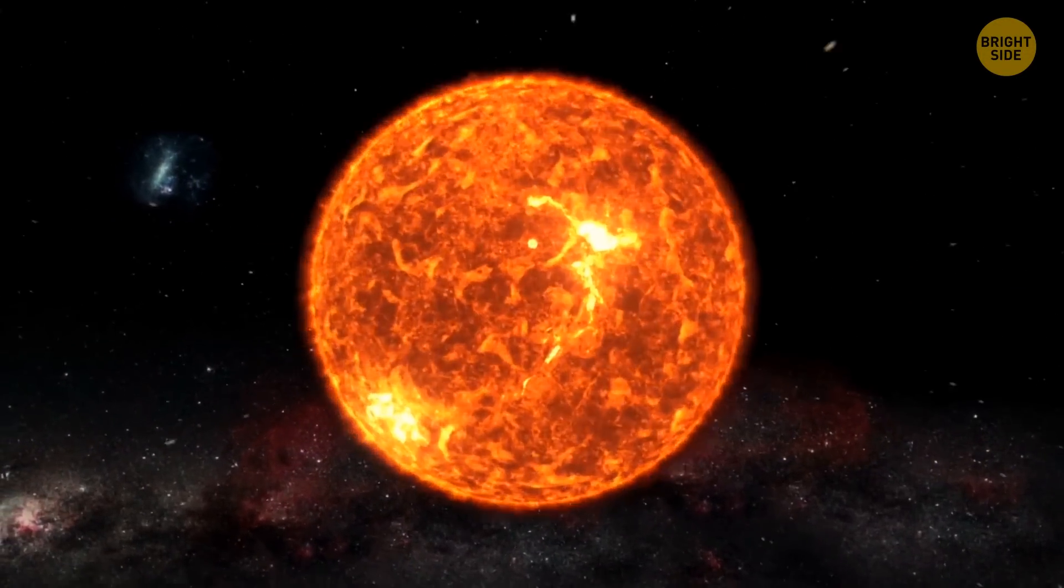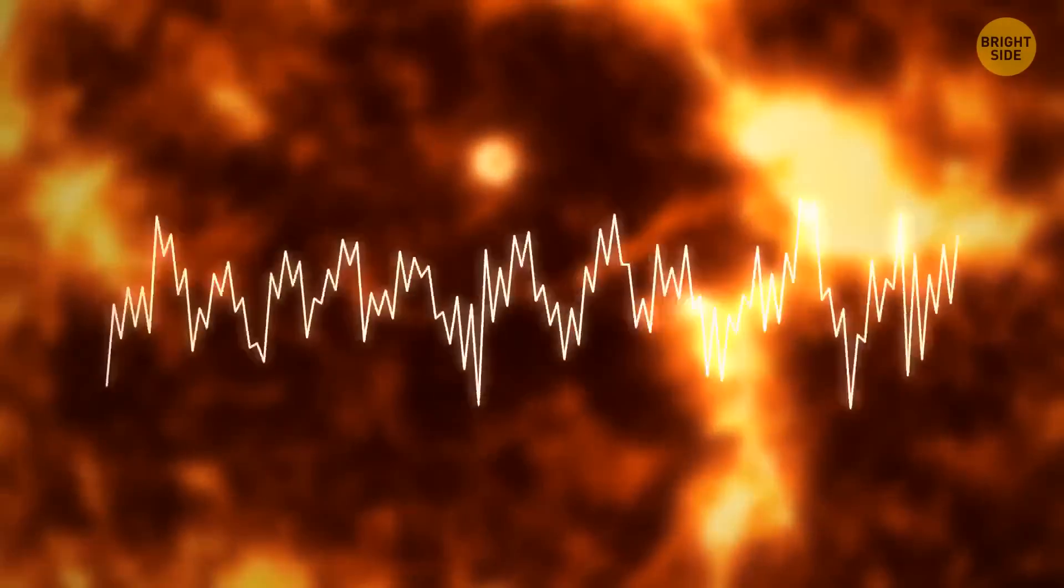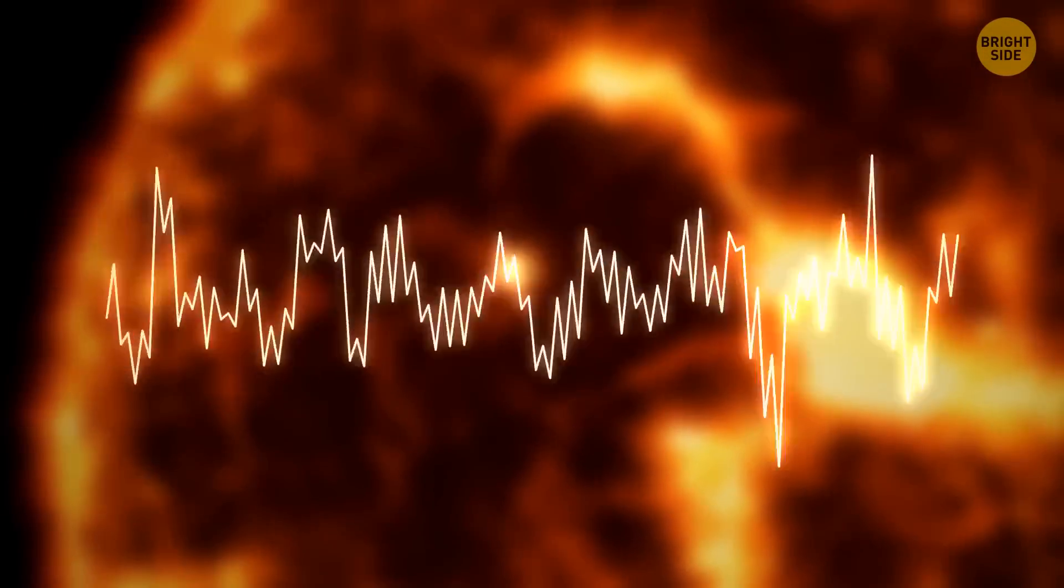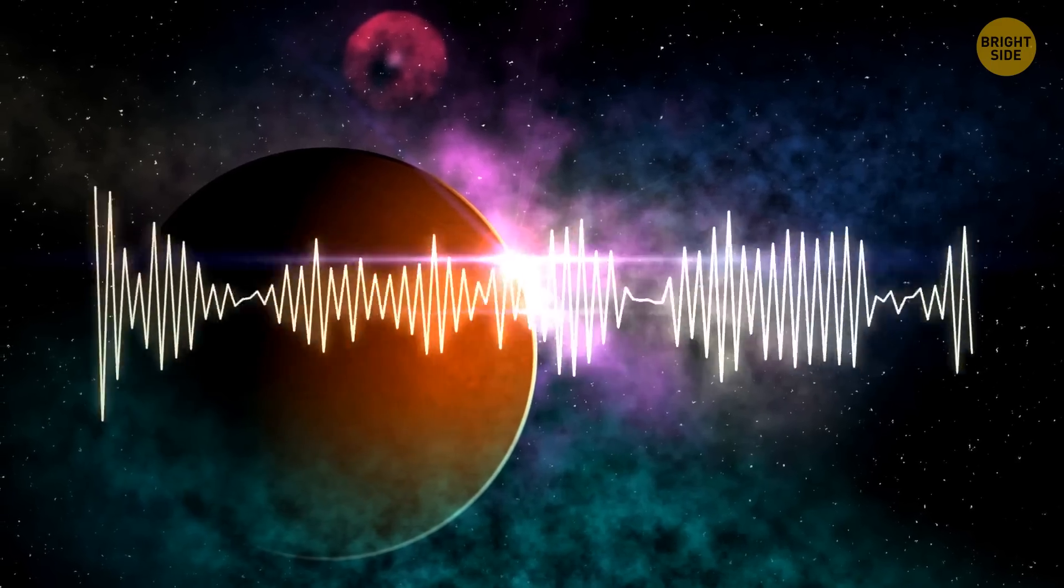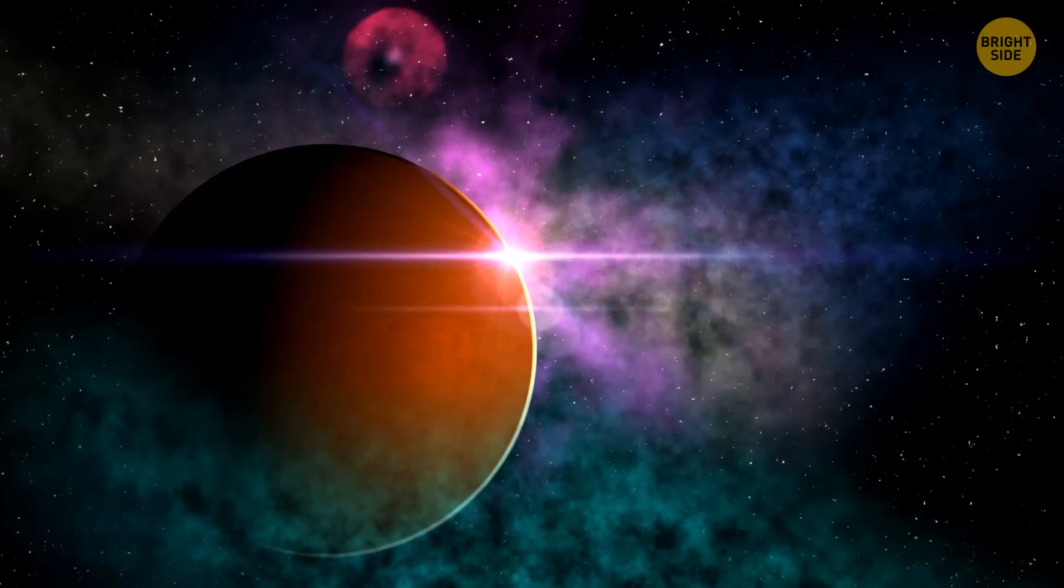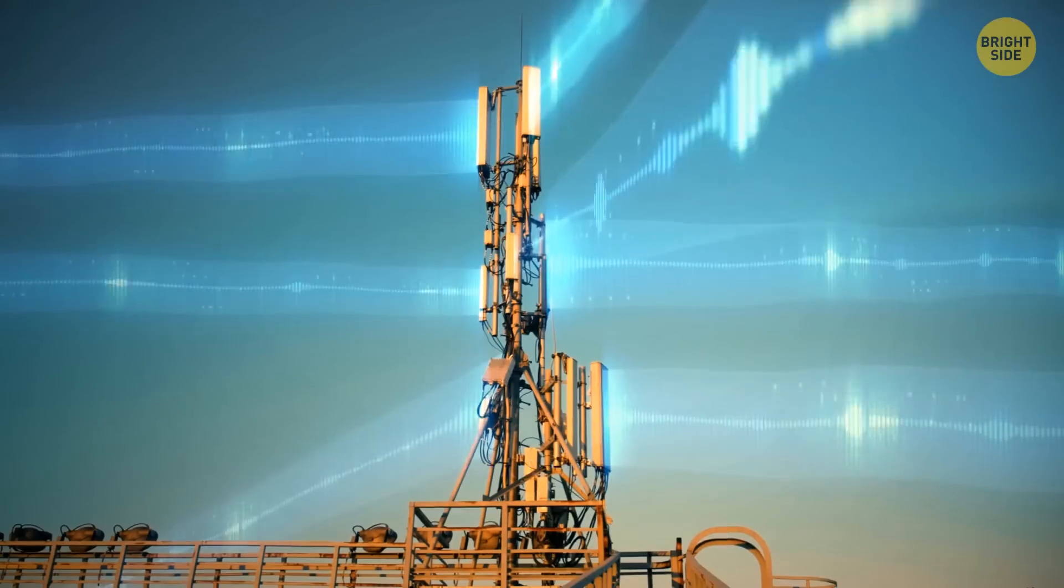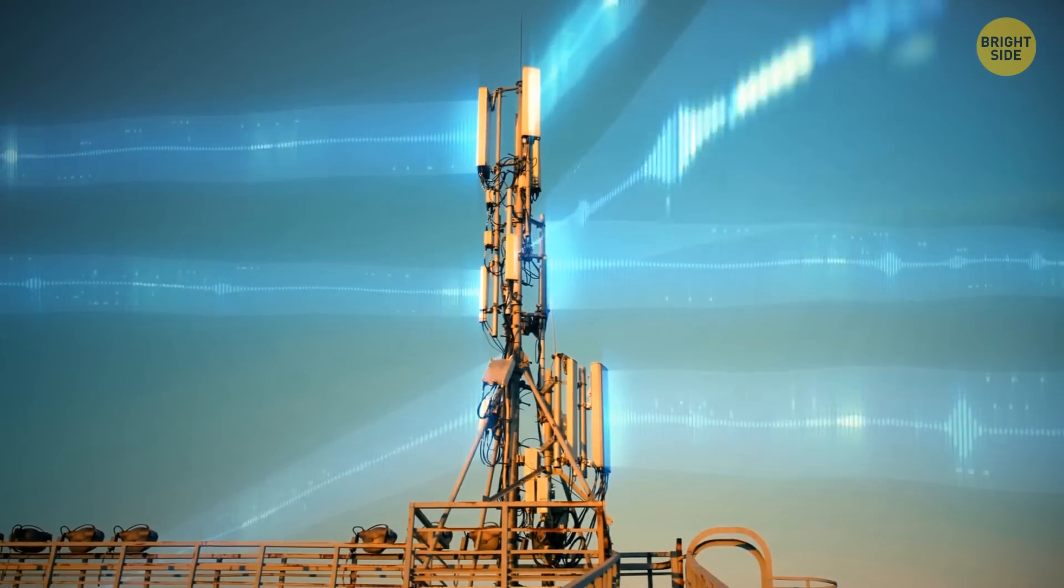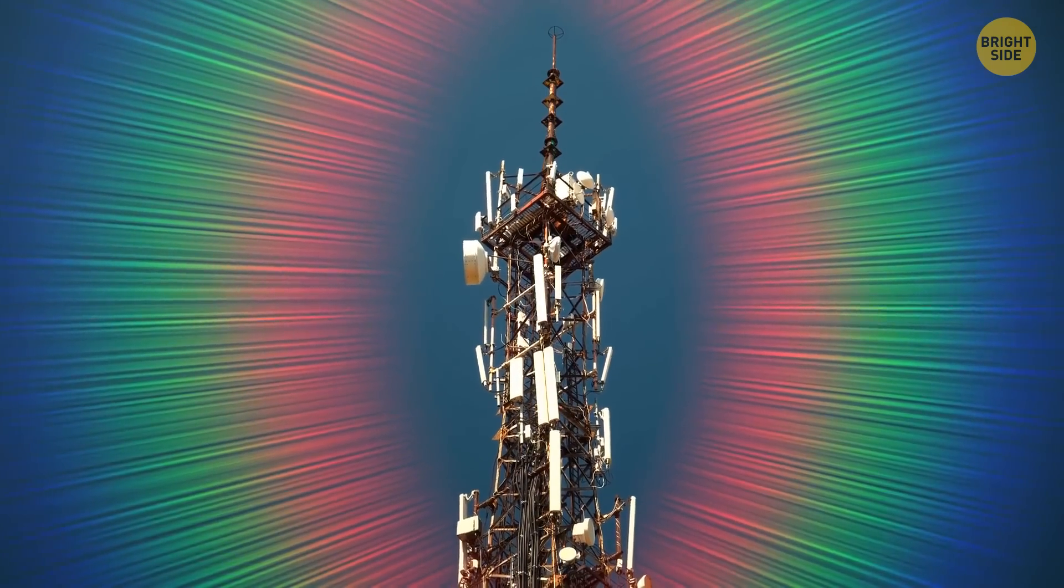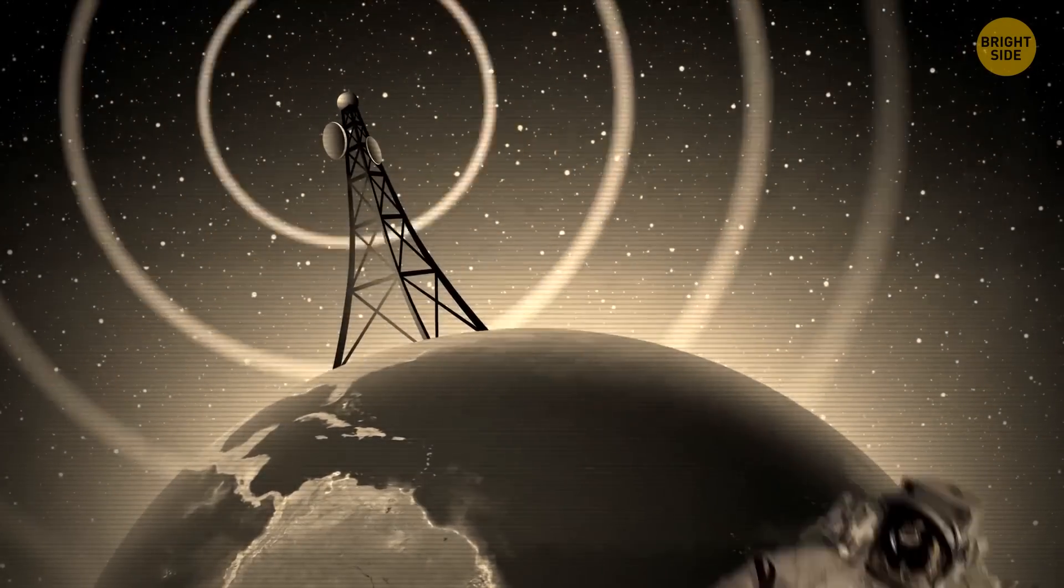Now, you've probably heard about things like the sounds of space, where you can listen, for example, to the sounds made by the sun or different planets. How do we record these ones? Easily. There is another way to hear sound in space. Electromagnetic waves. In other words, a radio. Radio is the same form of electromagnetic radiation as light. These waves can travel in a vacuum without any problems.